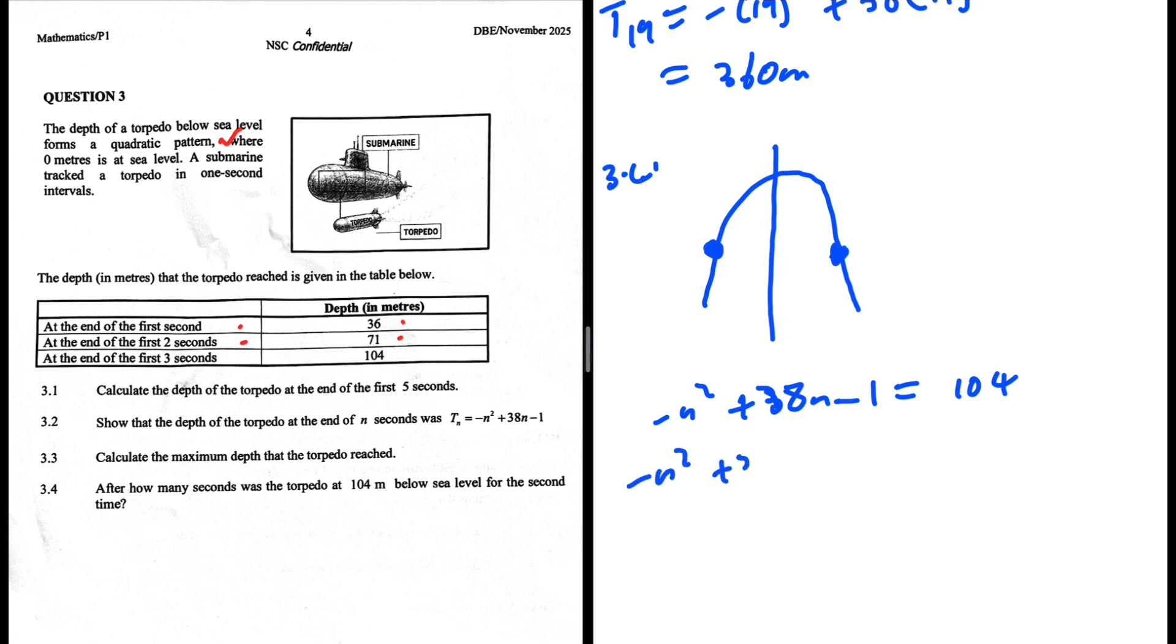So minus n squared plus 38n minus 1 minus 104, minus 105 equals zero. I'm substituting the quadratic formula: 38 plus the square root of 38 squared minus 4 times 1 times minus 105, divided by 2 times minus 1. So n equals...